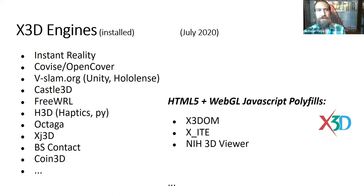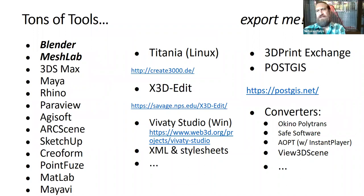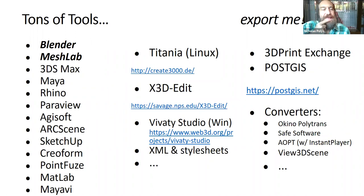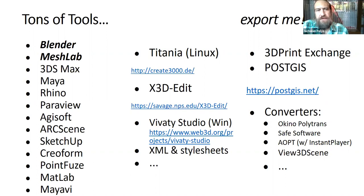There are lots of choices for publication, and the same goes for authoring. Along the left are installed standalone engines for your deployment, and on the right are JavaScript HTML5 implementations. This slide shows a range of different tools that can produce X3D and VRML content. You've got open source tools like Blender and MeshLab supporting X3D, and there are pathways for 3D Studio Max — the HLRS Studio Max exporter is maintained and quite strong.